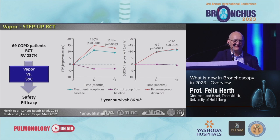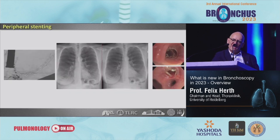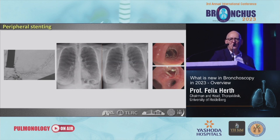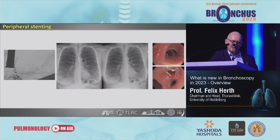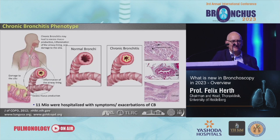Even vapor is being updated — we are designing a trial for how to use vapor also in the lower lobe. There are also completely new ideas: going back to what emphysema is, we know it is a small airway disease. Why not stent the peripheral part of the lungs? First-in-human trials for peripheral stenting — reopening the peripheral lung by placing small stents — are currently ongoing, with two different techniques available.